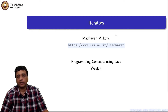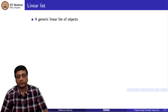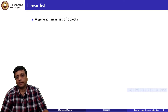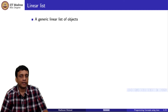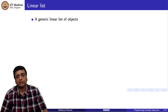We are going to look at a very important example of this called an iterator. Imagine that we have a linear list — a linear list is just a sequence of values, a generic list of objects. We do not particularly care what these objects are; we just have a list and we could implement this in many different ways.